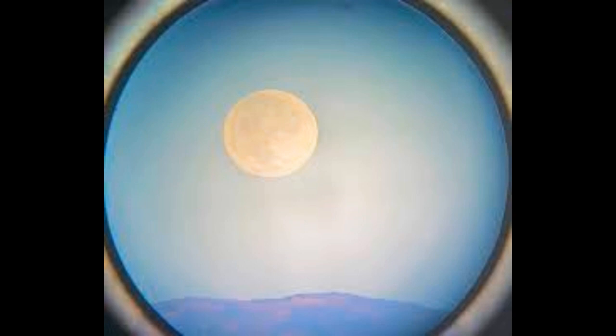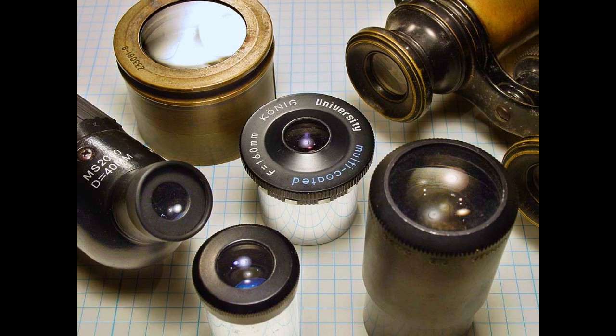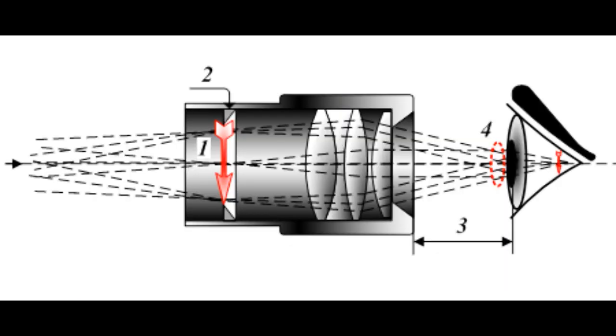Unless it's focused onto the sensor in a digital camera or some other detector, this prime focus image is bright, but very small, and needs to be magnified for visual use. This is where a secondary set of optics comes in, the eyepiece. Think of the eyepiece or ocular as a small but powerful magnifier that brings a close-up view of the prime focus image to the eye.